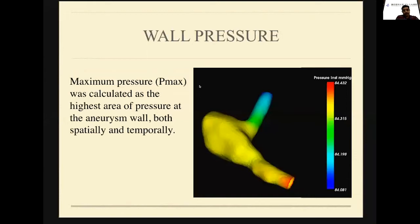What is wall pressure? This is the pressure exerted by the blood on the wall. There are multiple variables. What many studies show is pressure — instantaneous pressure, which is also called Pmax. The Pmax was calculated as the highest area of the pressure at the aneurysmal wall, both spatially and temporally. It was color coded: blue is less pressure and red is higher. This is an example of an aneurysm which has more of a high pressure.